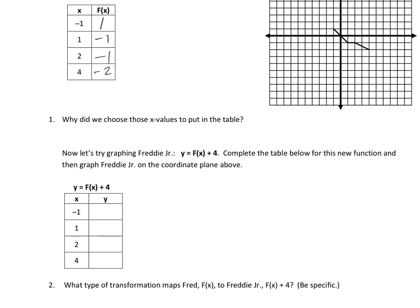When x is negative one, f(x) is one, so one plus four gives me five. When x is one, f(x) is negative one — add four and I get three. When x is two, f(x) is negative one — add four and I get three. When x is four, f(x) is negative two — add four and I get two. I've now created a new set of points to graph the entire function, using those as the four critical points and then connecting the dots.